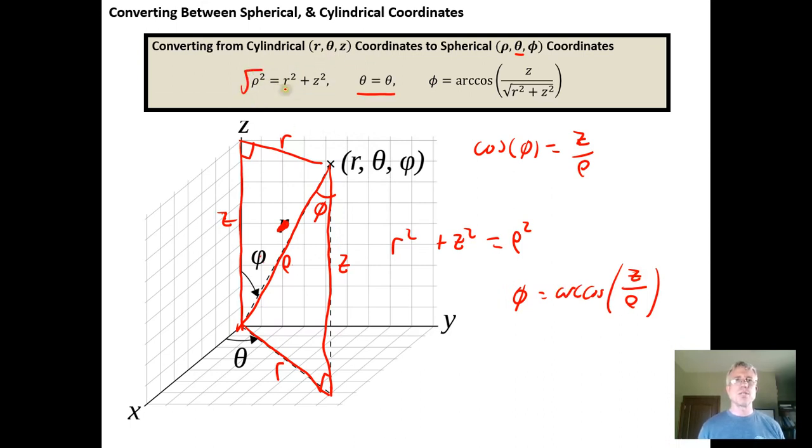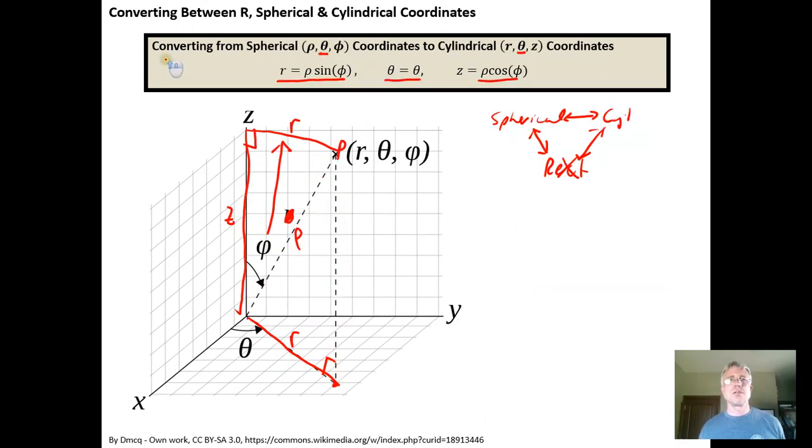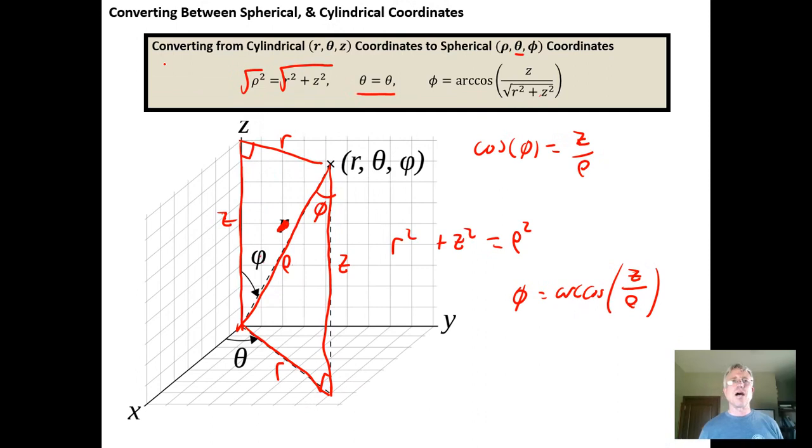But ρ from right here we've established that ρ² is equal to r² plus z². So if we want ρ we just take the square root of both sides and we can replace the ρ here with the square root of r² plus z². So these are relationships that can allow us to map directly between the cylindrical and spherical systems without having to pass through the rectangular coordinate system as an intermediate device.